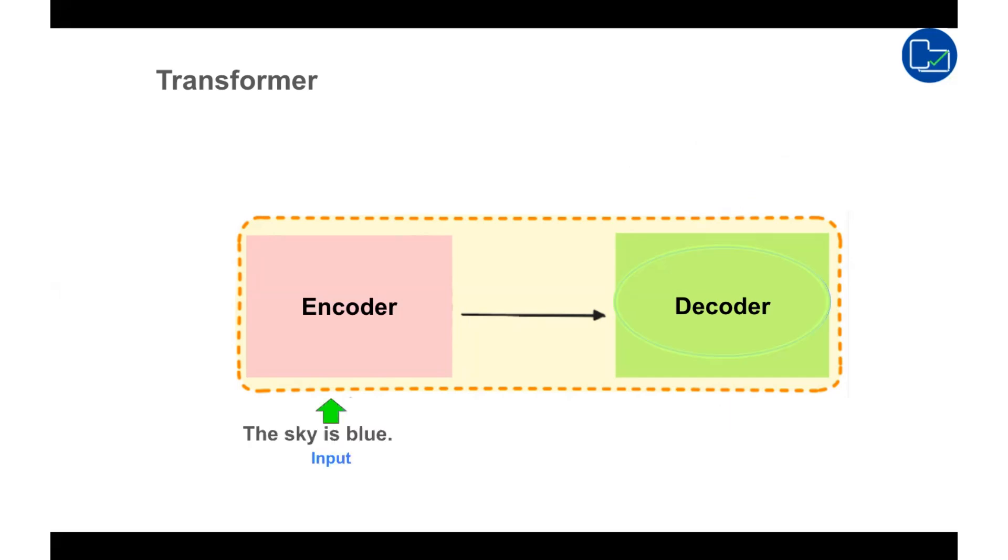In summary, the transformers encoder analyzes the input sentence and passes a detailed understanding to the decoder, which generates the output one at a time, using special tokens like SOS and EOS to guide the process. This whole architecture enables the model to understand the language beyond literal translation and enable it to have more natural and context-aware communication.